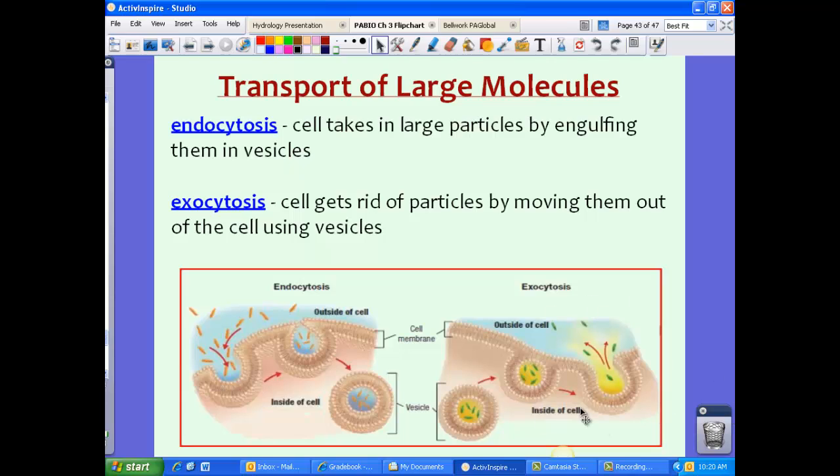In exocytosis, this is where your cell wants to get rid of particles. Maybe it's a waste product, or maybe it's something that just needs to move outside the cell, but it's too big to move across that plasma membrane. In this case, the vesicles are going to engulf the object inside the cell and then move to the outside. It's going to open up through that plasma membrane, allowing the stuff to exit. This is exocytosis. Think of exiting, or exo, exit.